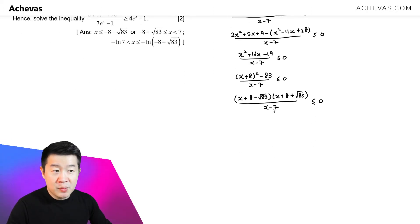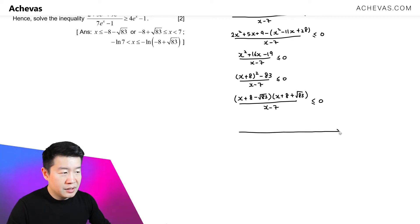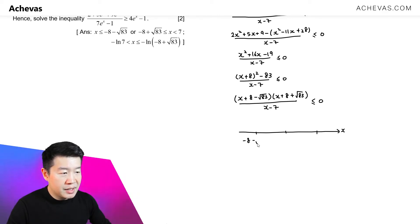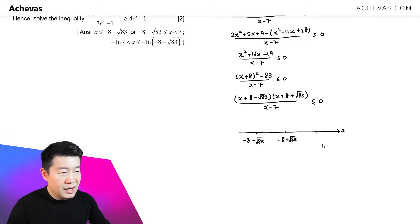This now allows us to sketch the critical points on the number line. On the number line for x, we have three values: minus 8 minus square root of 83, which comes from the first factor in the numerator; minus 8 plus square root of 83; and 7, from the denominator.